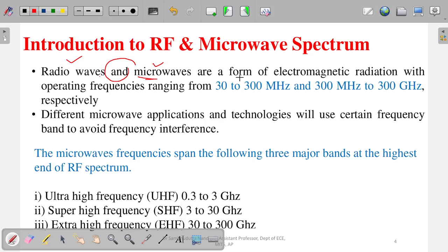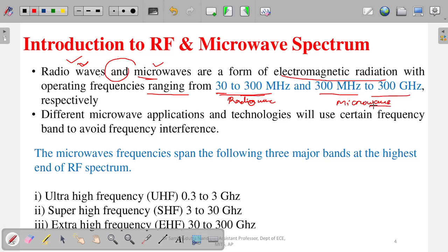Radio waves and microwaves are forms of electromagnetic radiation — electromagnetic waves propagating in some medium. The operating frequency for radio waves is 30 megahertz to 300 megahertz, and for microwaves it is 300 megahertz to 300 gigahertz. These are the two ranges — a common short-answer question asks for the range of radio waves or microwaves, and these are the answers.